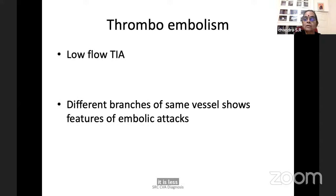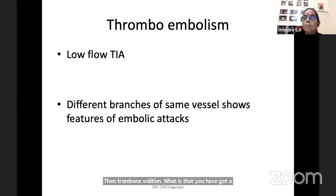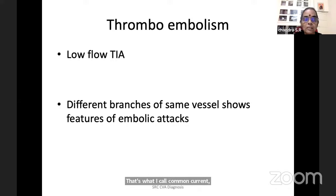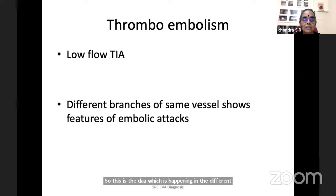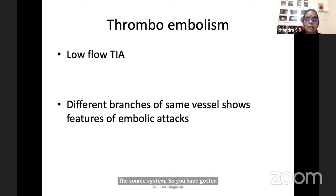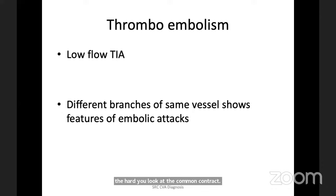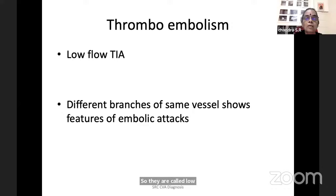Thromboembolism: you have a thrombosis in a major vessel which is embolizing — for example, the common carotid artery. Low-flow TIAs: TIAs happening in different branches of the same vessel. You may have an ICA TIA, then MCA TIA, then retinal artery TIA — don't look at the heart, look at the common carotid artery. They are called artery-to-artery embolism. Even though they are embolic, they are not cardioembolic.